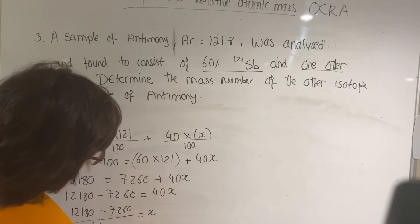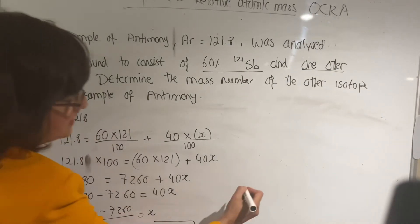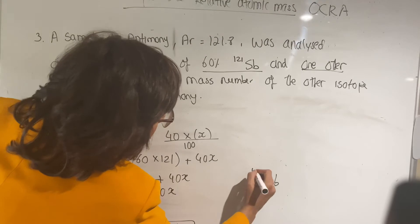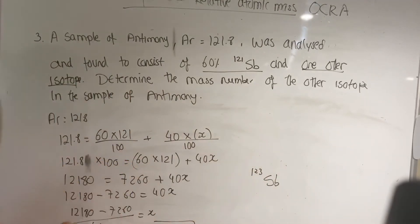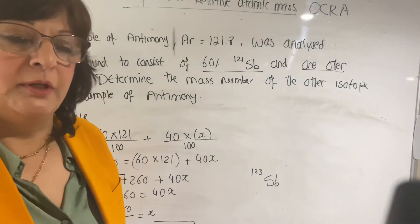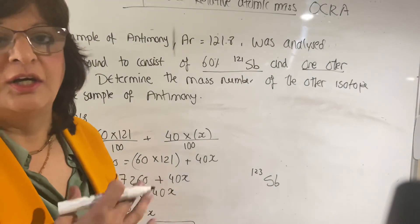So 12,180 minus 7,260 divided by 40 equals to x. So x is going to be 123. So the other isotope is Sb-123. That's another type of relative atomic mass question you can get, which is slightly more difficult, but if you practice then you get it right in the exam.